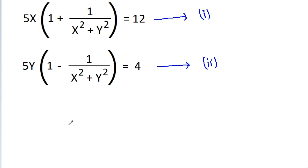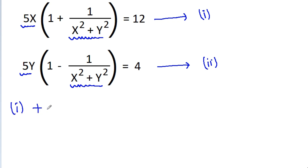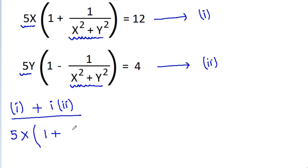The second approach is by using complex numbers. Here we have 5x in equation 1 and 5y in equation 2, and the portion (1 by x² plus y²) is the same in both equations. So if we add equation 1 and iota times equation 2,